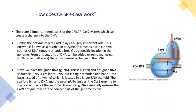The scaffold binds to DNA, and the small gRNA guides the Cas9 enzyme to the correct part of the genome. Therefore, the gRNA essentially ensures the Cas9 enzyme reaches and cuts the correct part of the genome.